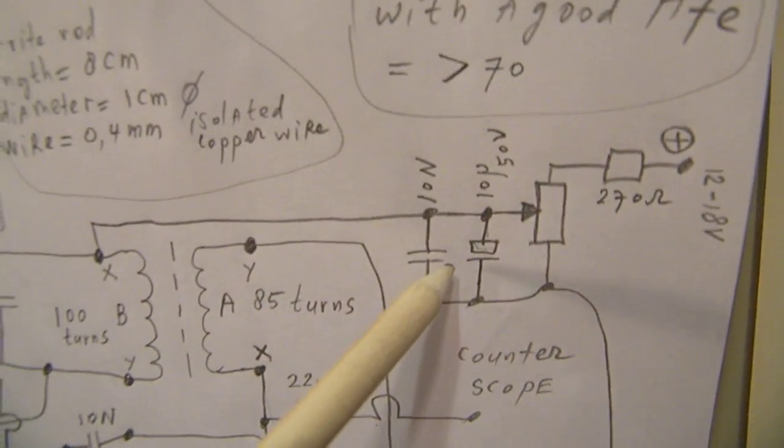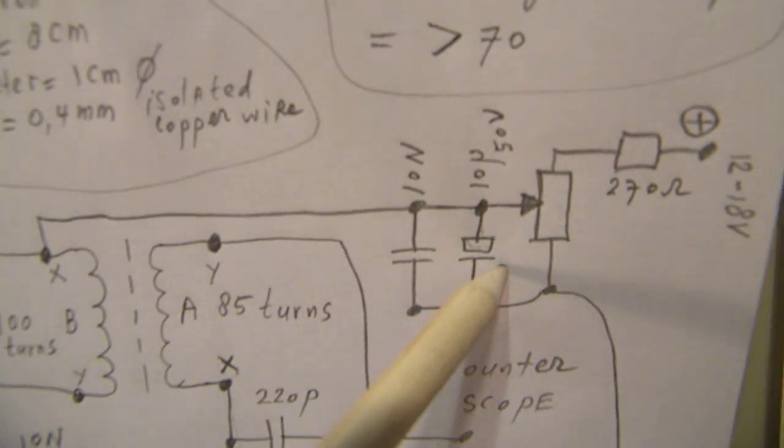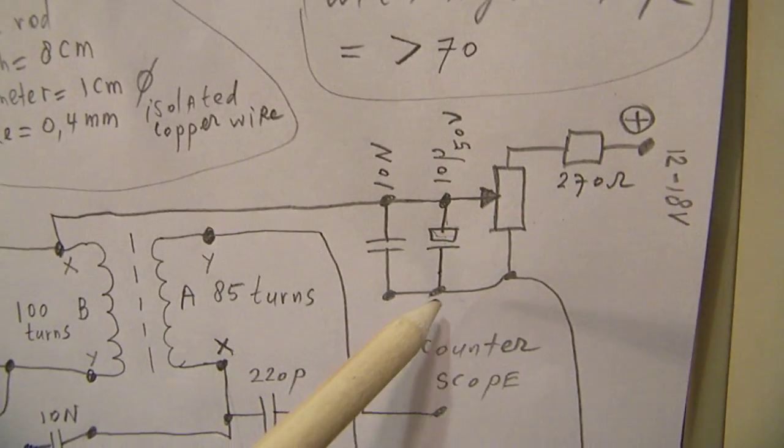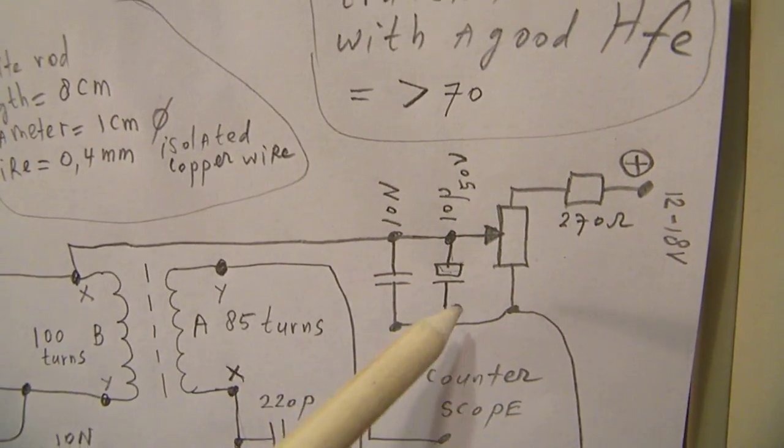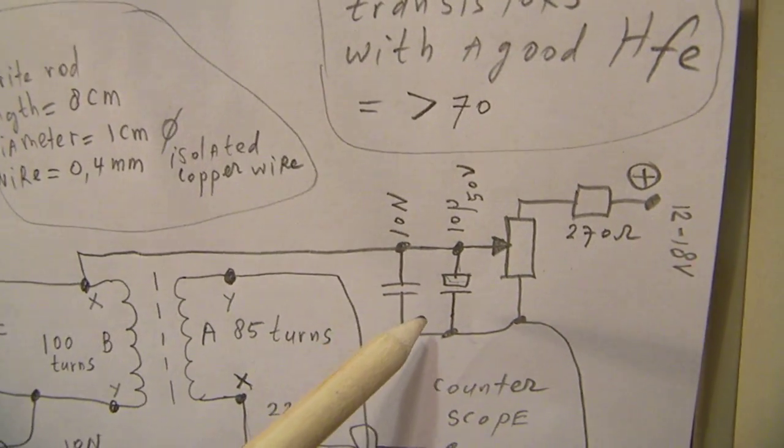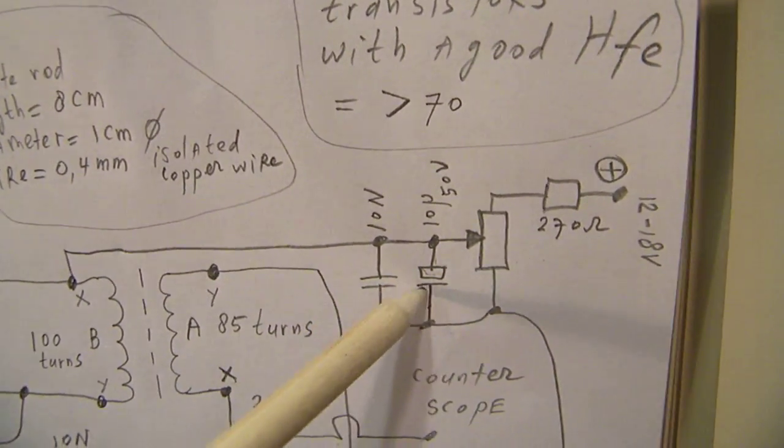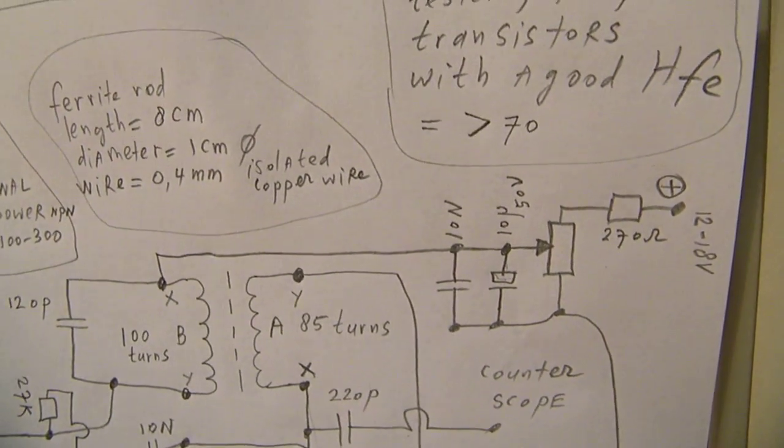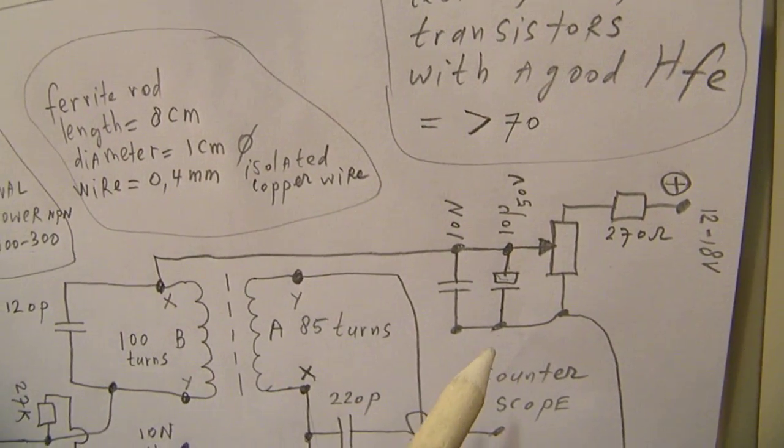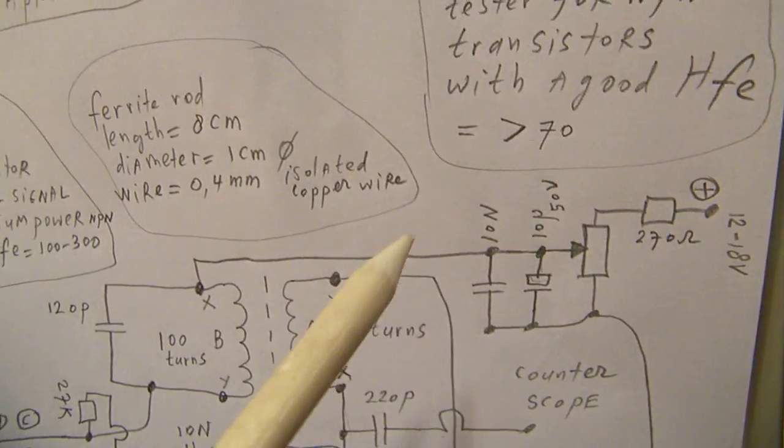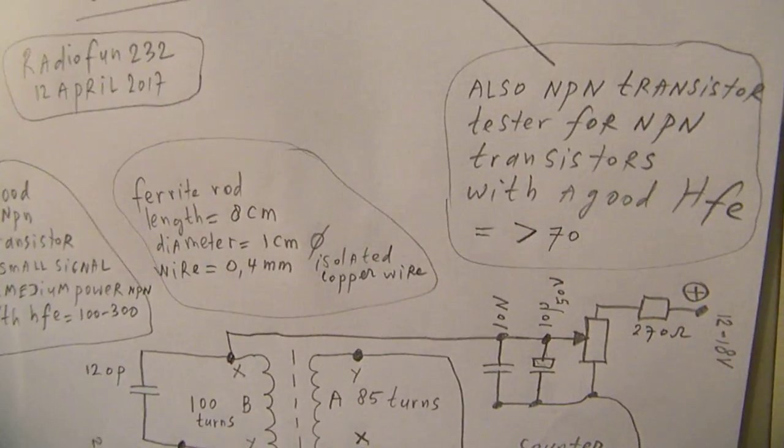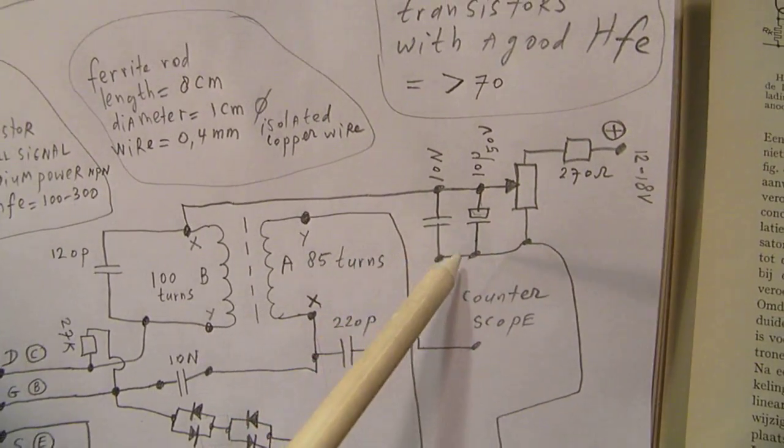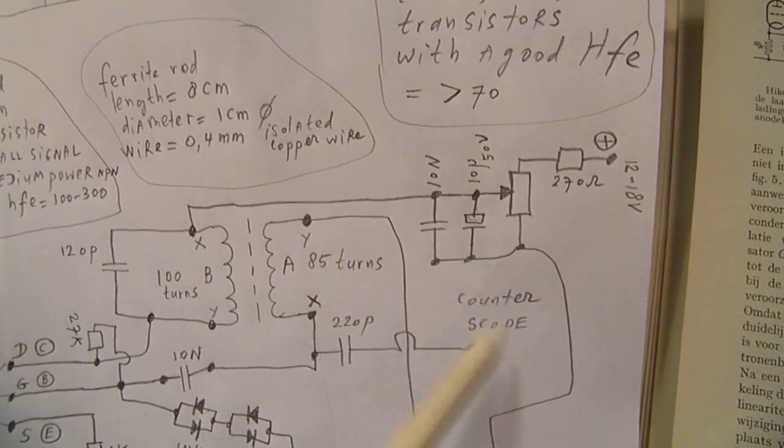But of course, you must also switch that 10 microfarad cap in another position. That could be a little bit of a problem. You can also omit this 10 microfarad cap in that case when you want to make the tester for PNP MOSFETs or PNP transistors. So that's important. This electrolytic cap may not be reversed.